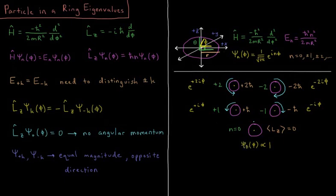So if we look at this pictorially at n equals 0, we have no net angular momentum. Our psi 0 is proportional to a constant, no angular momentum. For plus or minus 1, we have one that goes counterclockwise, one that goes clockwise, plus h-bar and minus h-bar for their angular momentum around the z-axis.